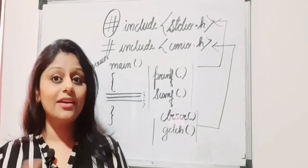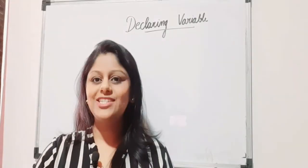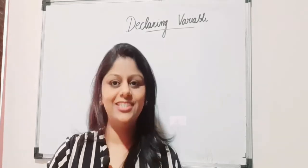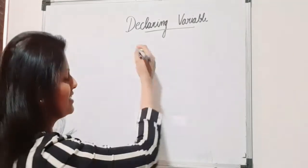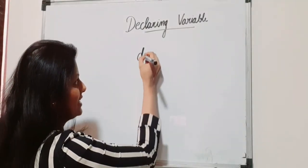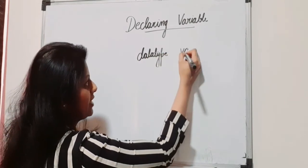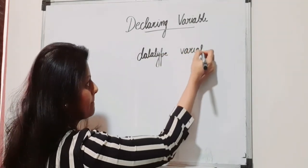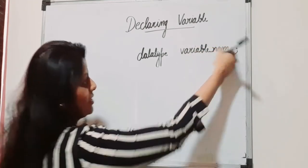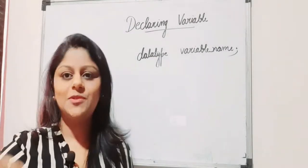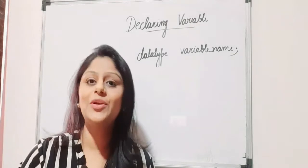Our next topic is declaring a variable. The syntax for declaring a variable is: data type, space, variable name, and a semicolon. For example: int a; or float b;